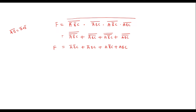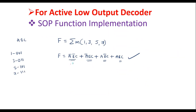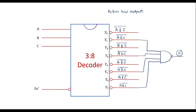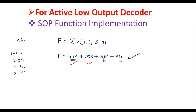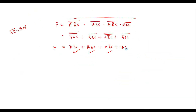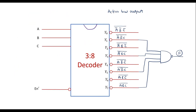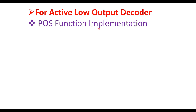Let me verify with the previous function. The first term is ā·b̄·c — correct. Second is ā·b·c — correct. Third is a·b̄·c — correct. Fourth is a·b·c — correct. Thus we can implement an SOP function using an active low decoder output. We must use a NAND gate — this should be remembered. Now let me consider implementing a POS function using an active low output decoder.